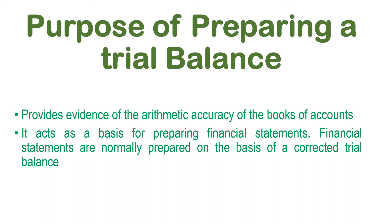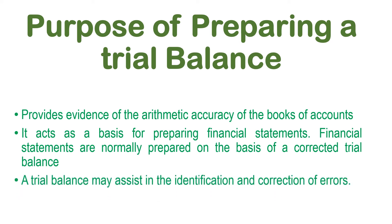The trial balance may also assist in the identification and correction of errors. Sometimes we may list down all the debits and all the credits, and upon adding them, we might find that they are not exactly the same. When the debits and the credits are not the same, it means there was an error when posting the debits and credits during the double entry system. The moment we detect this, it helps us to investigate why they are not the same, allowing us to uncover and correct errors. There is a whole topic on errors that we shall look into further, covering how the trial balance helps us to identify them.